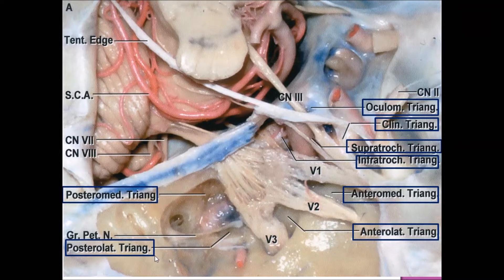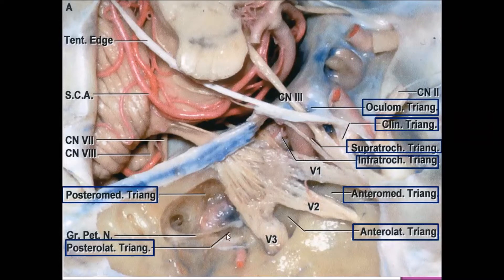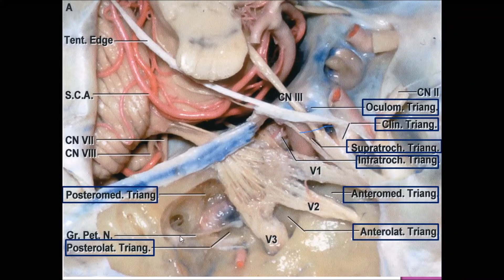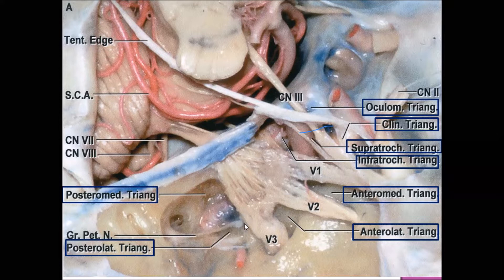The posterior triangles of the middle cranial fossa are the posteromedial and posterolateral triangles. The posterolateral triangle is called the Glasscox triangle, and the posteromedial triangle is also called Kawase's triangle. The posterolateral triangle is bounded by the greater superficial petrosal nerve, the lateral part of the mandibular division below the point of intersection with the greater superficial petrosal nerve, and the BDN nerve. The content of this triangle includes the middle meningeal artery.